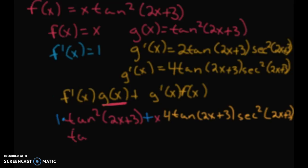tan(2x+3) times 4x·sec²(2x+3) + tan(2x+3). And that is your derivative.